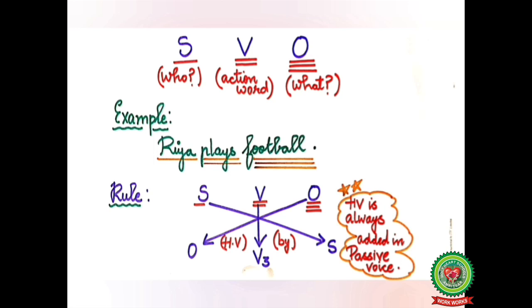The first step in voice is to identify subject, verb, and object. Who is your subject, the action word is your verb, and what is your object. We will do single underline for subject, double underline for verb, and triple underline for object. For example: 'Ria plays football.' Who? Ria — subject, single underline. What? Football — object, triple underline. The action word 'plays' — double underline.